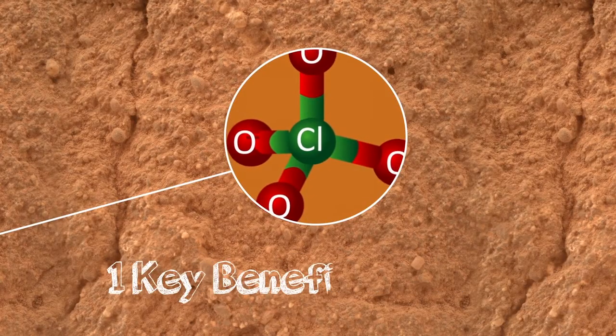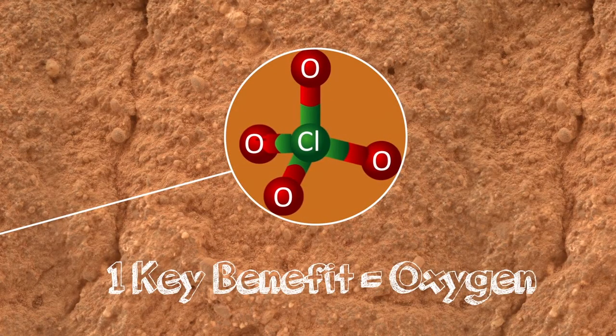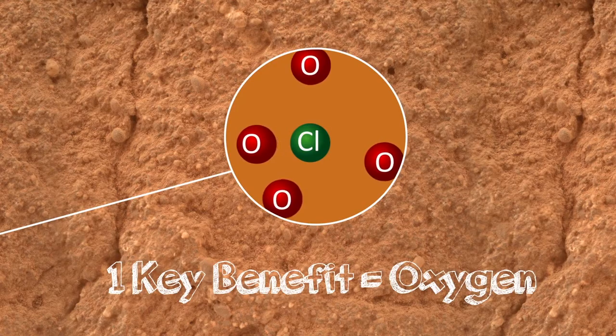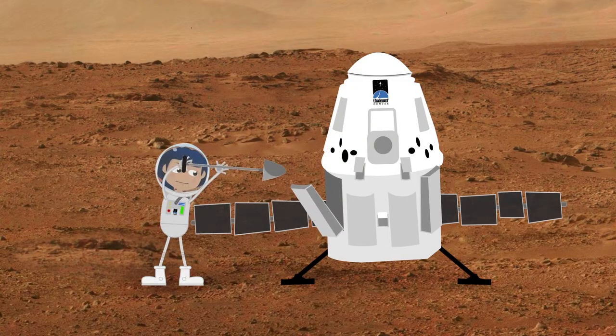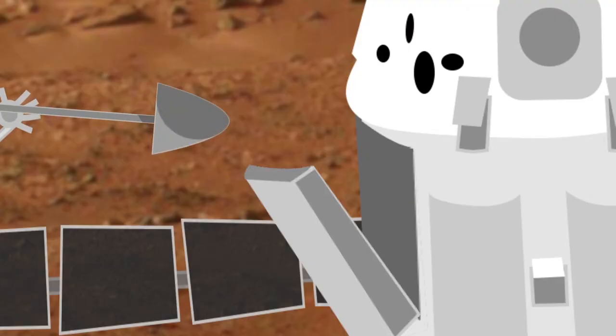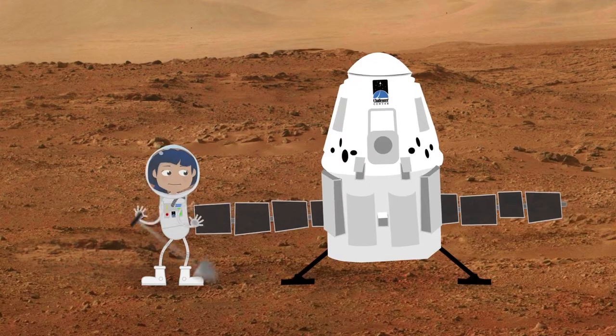Perchlorates have one key benefit, though. They contain oxygen, which can be hard to come by on Mars. Not only is oxygen useful for breathing, but it can also be used to make rocket fuel for a return trip to Earth.